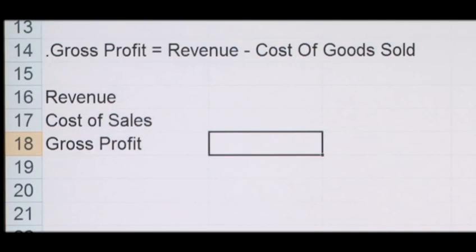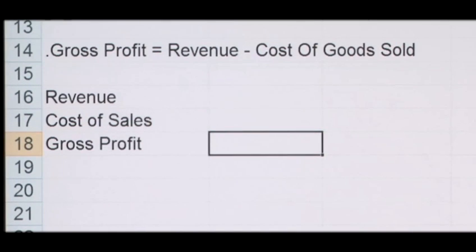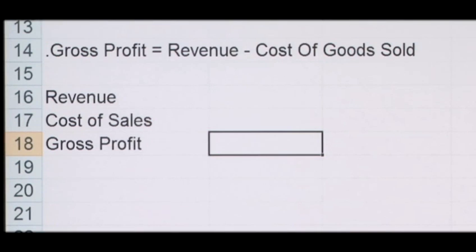How to calculate gross profit. Gross profit is simply a company's revenue minus its cost of goods sold. It's the residual profit after selling a product or service and deducting all the costs associated with this production and sale. Gross profit is very important because it indicates how efficiently management have used the labour and the supplies in the production process, and then it's used to calculate the gross profit margin.